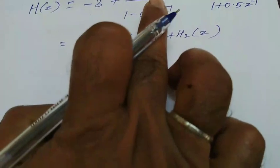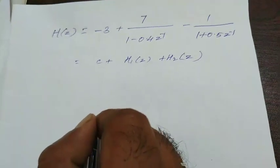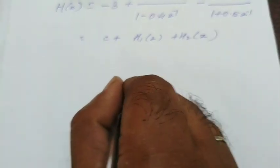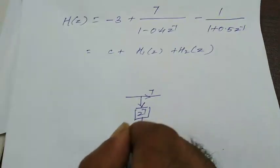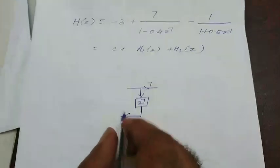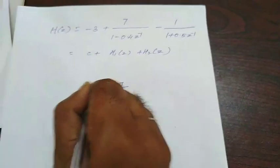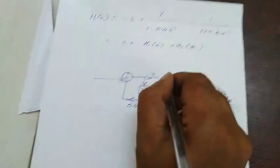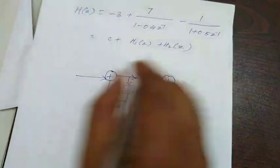If you are considering this h1 of z means we have to apply the direct form realization. Here, our constant is 7. You are having 7, then there is a delay, z inverse and opposite direction it is going. This minus 0.4 becomes plus 0.4. Like this we are having and this system output is added at the end.